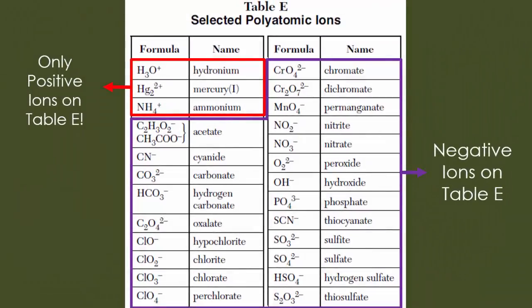If you notice on table E in the top left-hand corner, those are going to be your only positive ions — you should probably make a box around them right now. Everything else on table E is going to be a negatively charged ion. You'll notice they have either a negative sign, which means negative one, a negative two, or a negative three. We'll be discussing these charges in detail in a later unit.